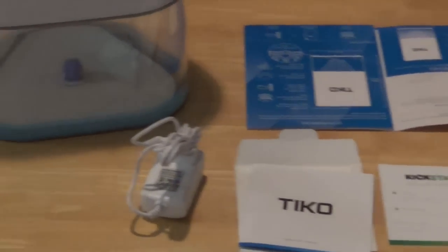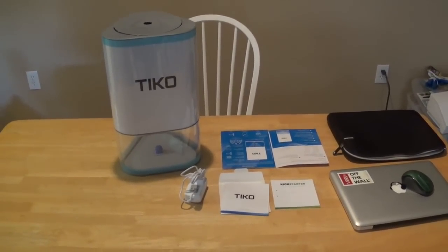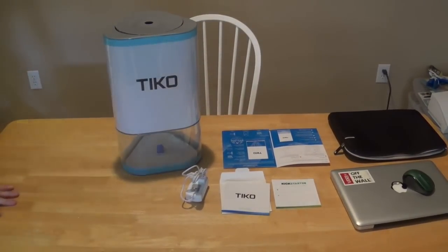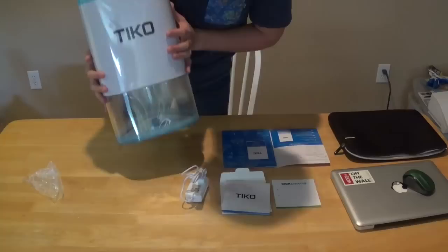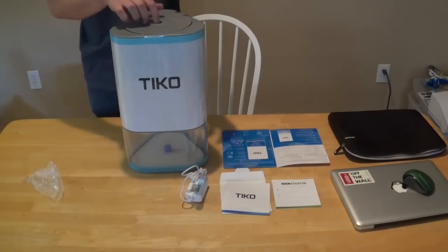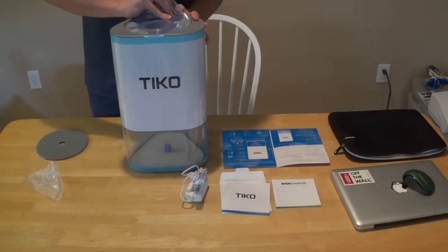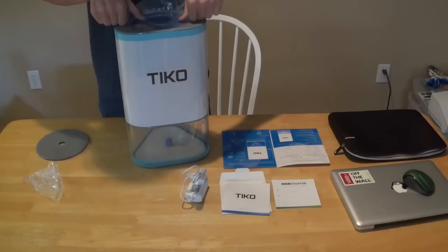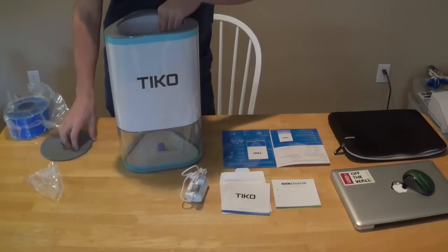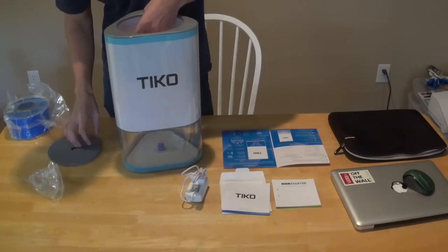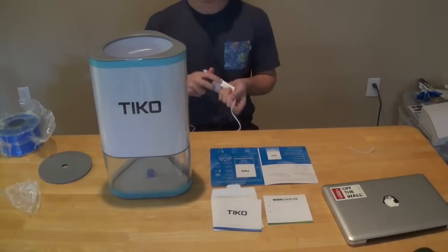Inside the box looks like we've got the manual, a nice thank you card from Kickstarter, setup guide, and then the printer itself. As you can see it's a nice compact size, perfect for a desktop. There's even a little piece printed in there from shipping. Inside we've got some blue filament, PLA filament, ABS right up here.